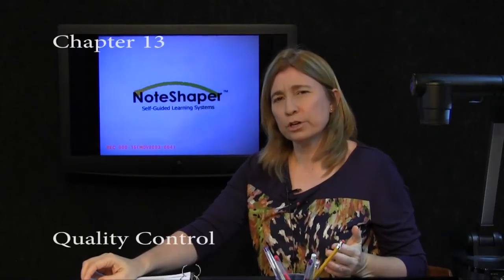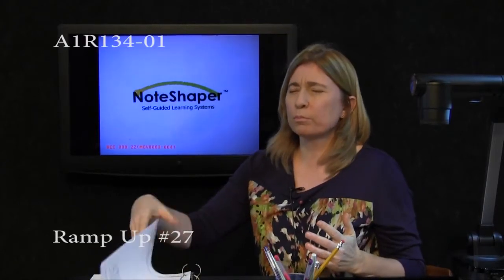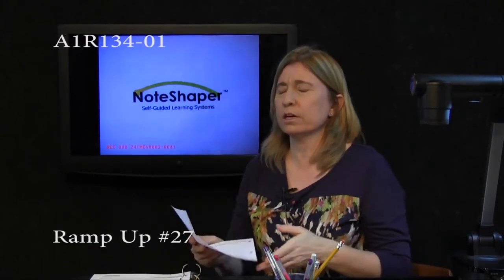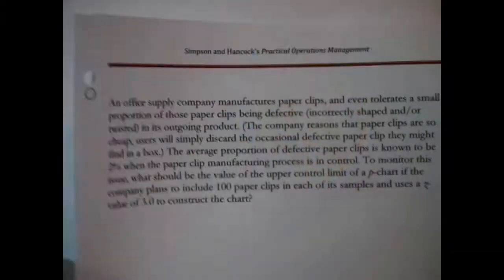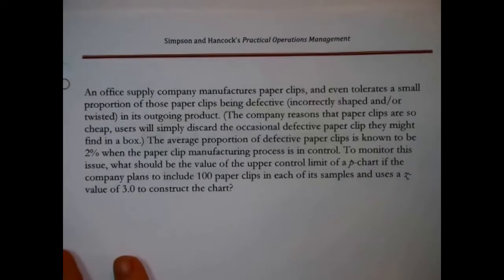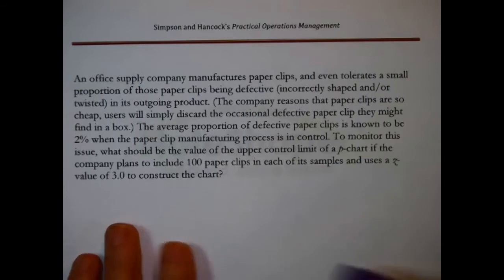A so-called P-chart is a control chart for tracking the proportion of something when the proportion of anything is a concern of yours. This particular problem, the proportion is the proportion defective, ironically, but nonetheless the issue is the percent or proportion.